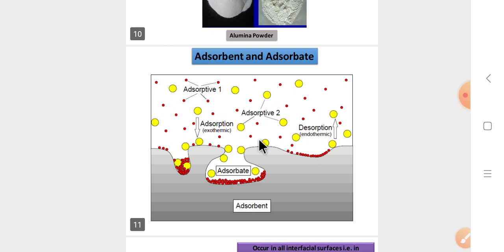Here, adsorbent and adsorbate - look at this, students. Adsorbate one - all the dark molecules are adsorbate one. The bigger molecules, yellow molecules, are adsorbate two. Now, adsorption is an exothermic reaction that exists on the surface of the layer.